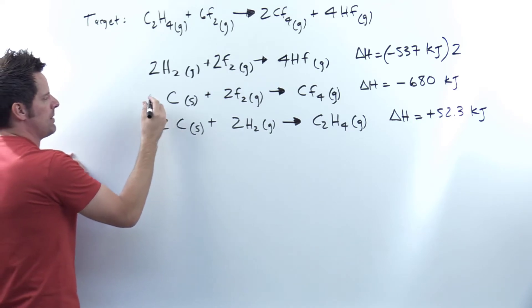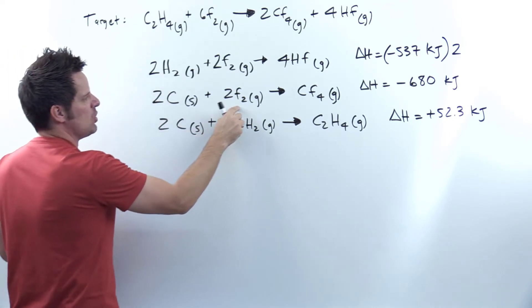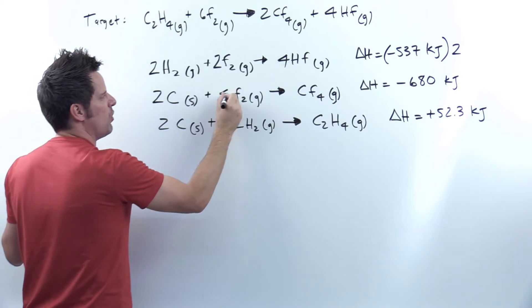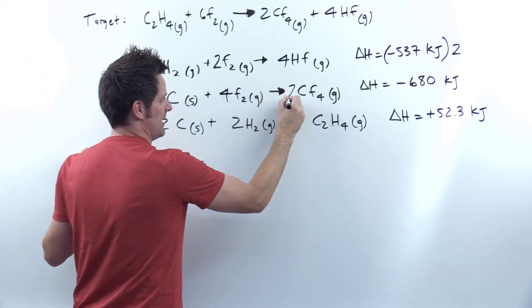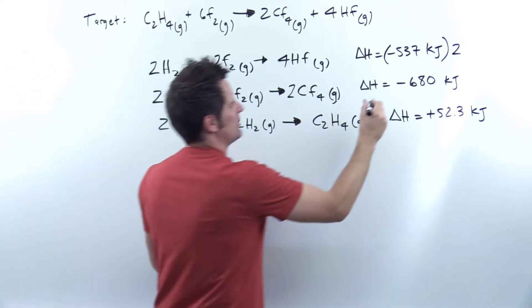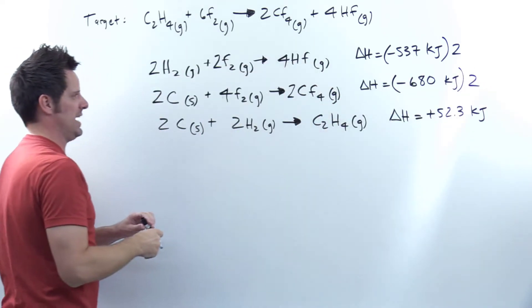So I've got one carbon, I'm going to multiply that by two. I have two F2s, I'm going to multiply that by two. Two times two is four, so I've got four there. And I've got one CF4, I multiply that by two, and I get two. Now I have to multiply the delta H also by two, and figure out the answer to that later.